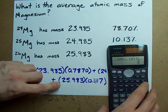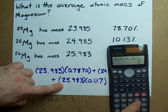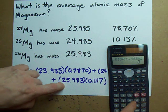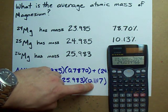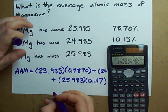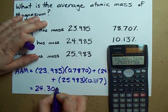And you add 25.983 times .1117, the other isotopic abundance. And you add all those together, you end up with 24.309.